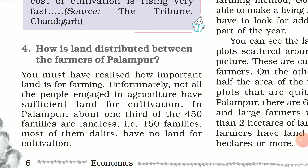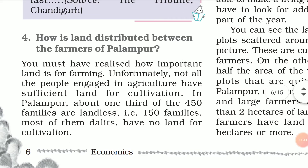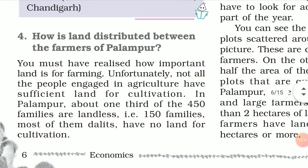Now let us see how land is distributed among the farmers of Palampur. Is it a uniform distribution where everyone has equal land, or a non-uniform distribution? In Palampur, about one-third of the 450 families — that is 150 families — are landless. Most of them are Dalits who have no land for cultivation.